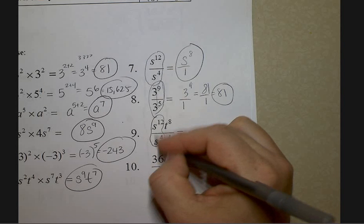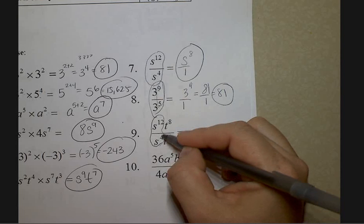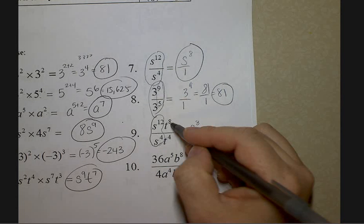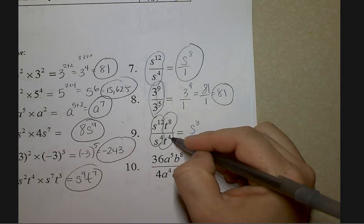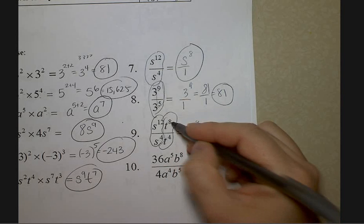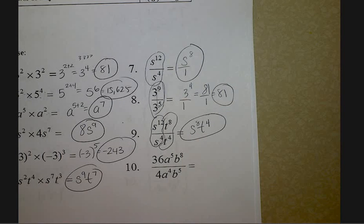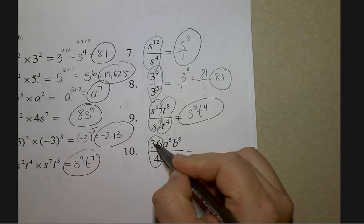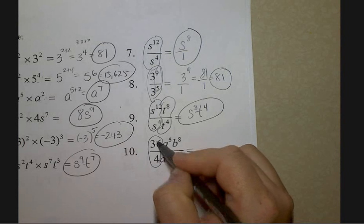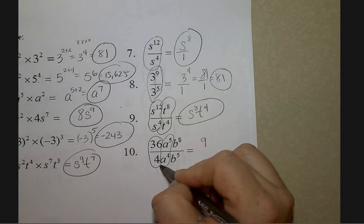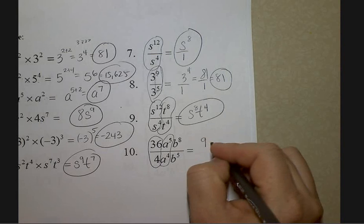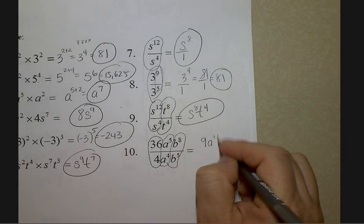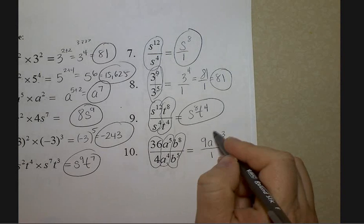Focus on same base — same base and dividing, I'm going to subtract. Twelve subtract four is eight; the larger exponent was on top, so s to the eighth goes on top. Same base: eight subtract four is four, larger exponent is on top, it stays on top. I can divide the coefficients: 36 divided by 4 is 9, larger number on top. Five subtract four is one, larger exponent on top. Eight subtract five is three, larger exponent on top — feel free to put a 1 on the bottom, not required.